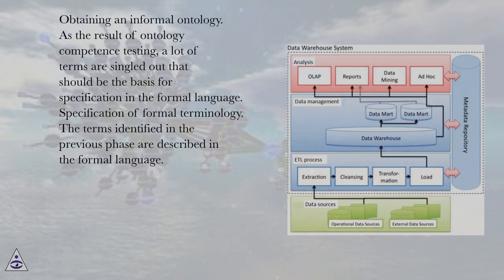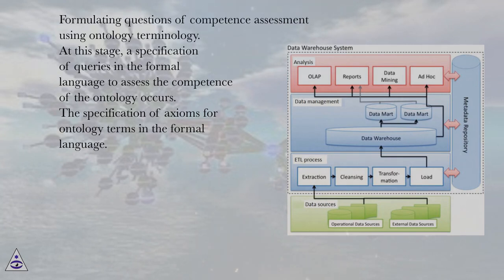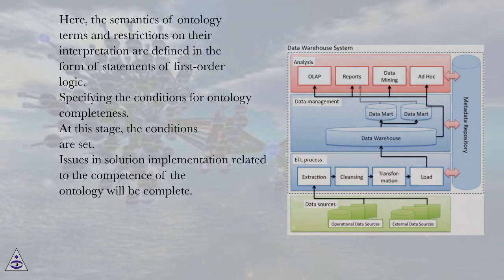Specification of formal terminology: the terms identified in the previous phase are described in the formal language. Formulating questions of competence assessment using ontology terminology: at this stage, a specification of queries in the formal language to assess the competence of ontology occurs. The specification of axioms for ontology terms in the formal language: the semantics of ontology terms and restrictions on their interpretation are defined in the form of statements of first-order logic.